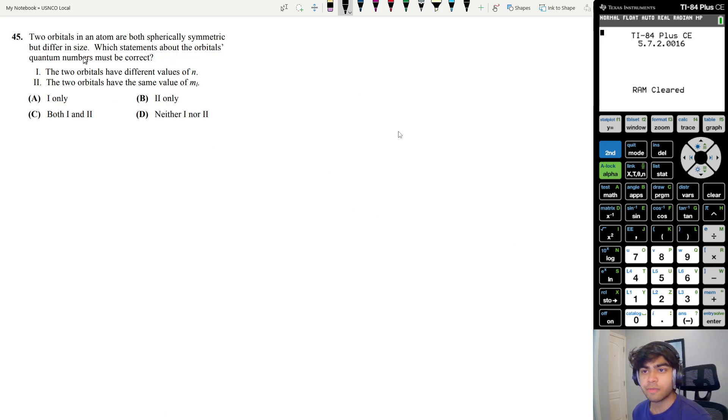Let's move on to question 45. Two orbitals in an atom are both spherically symmetric but different in size. What statements about the orbitals' quantum numbers must be correct? Let's do a little recap on electronic structure and atomic quantum numbers.